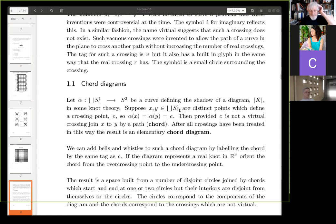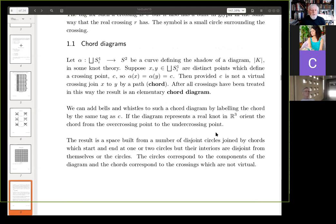After all crossings have been treated in this way, the result is an elementary chord diagram. Okay, well, we can improve this position by, if the diagram represents a real knot in R3, orient the chord from the overcrossing point to the undercrossing point. So, the result is a space built from a number of disjoint circles joined by chords, which start and end for one or two circles, but their interiors are disjoint from themselves for the circles. The circles correspond to the components of the diagram, and the chords corresponding to the crossings, which are not virtual.